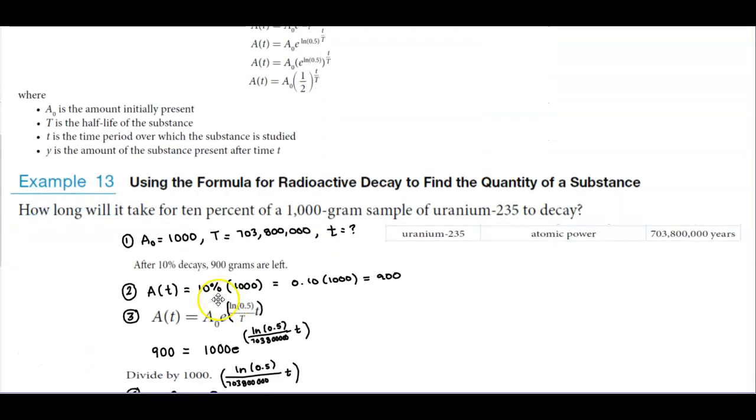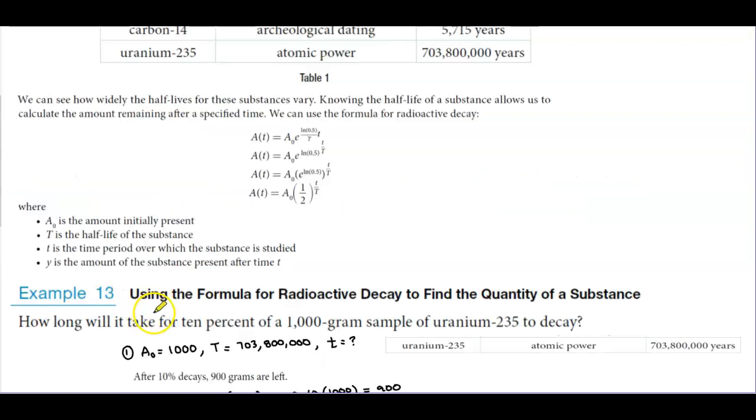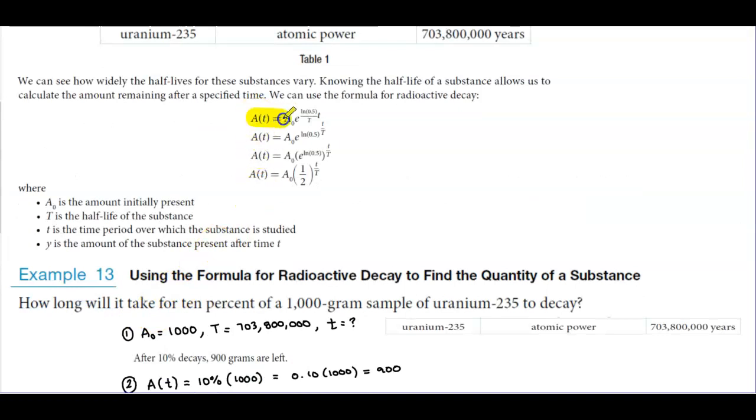So for example 13, we're going to use the formula for radioactive decay to find the quantity of a substance. So now the formula that we're going to use is this first one at the top here. We have A(t) which is equal to the initial amount e times natural log of 0.5 divided by t.